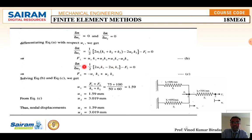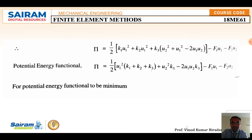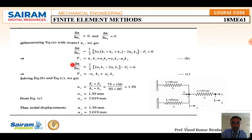Similarly, differentiating pi with respect to u2: ∂π/∂u2 = u2·k3 − u1·k3 − F2 = 0. This gives equation 2: F2 = −u1·k3 + u2·k3.